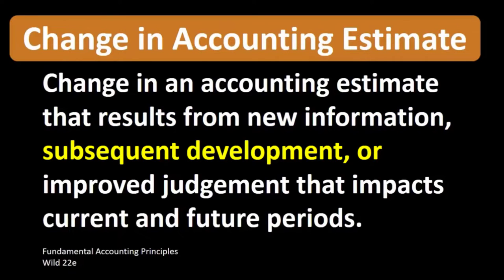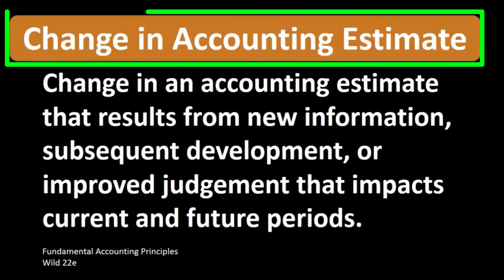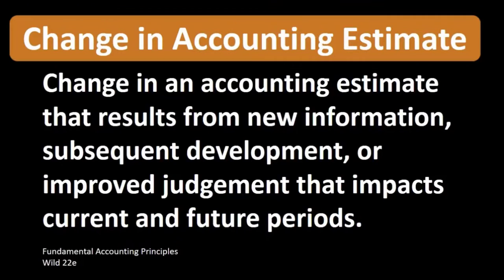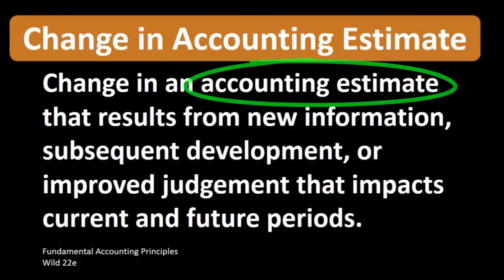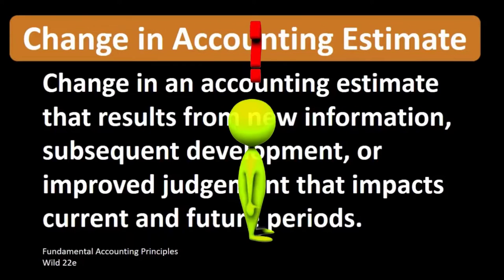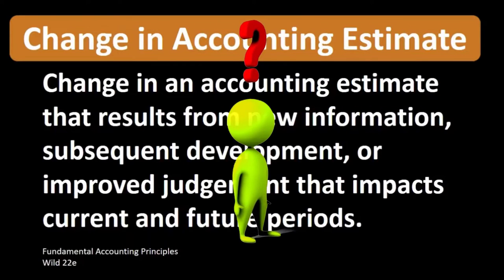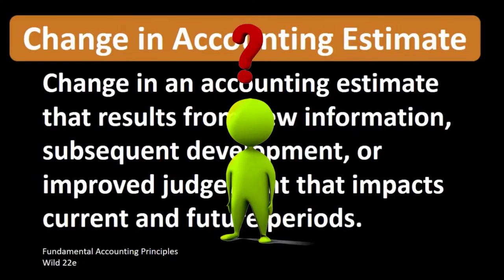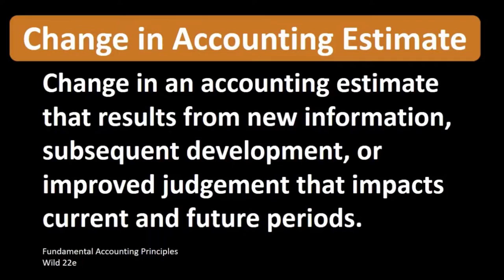subsequent development, or improved judgment that impacts current and future periods. When we're thinking about a change in an accounting estimate, we are of course thinking about an accounting estimate that has been made in the past. The fact that it is an estimate is an indication that we don't really know exactly what will happen in the future at the point of that estimate.